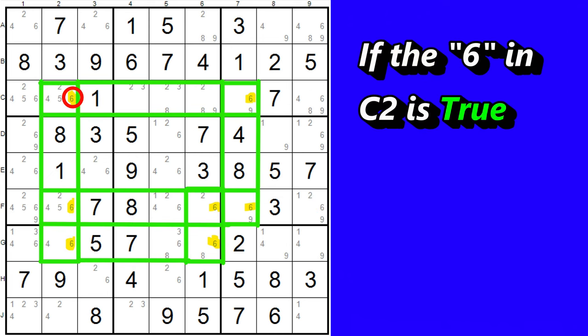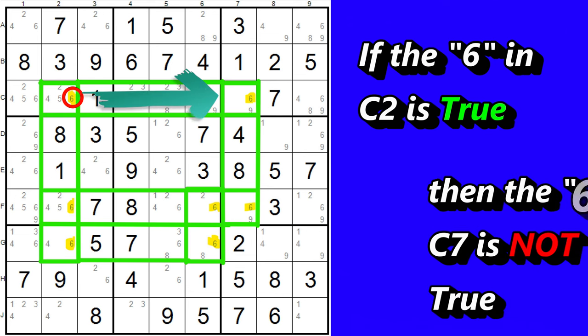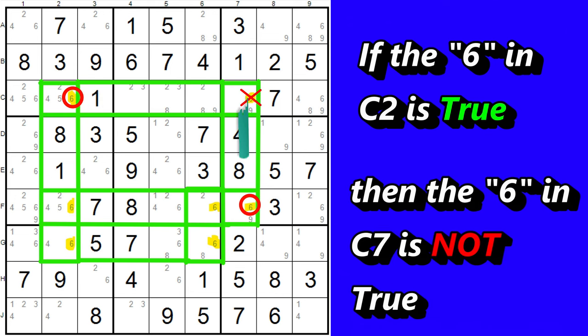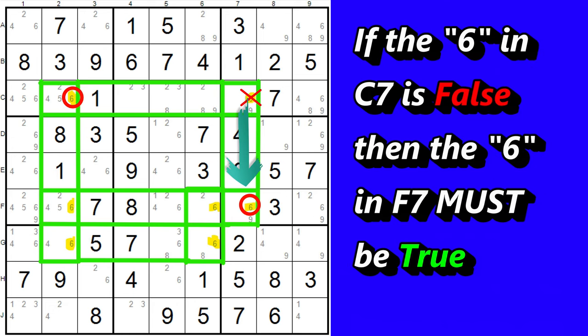Let's take a look at the logic behind this. Let's say this cell is a 6. So if this is true, then this cell in column 7 can't be true. So this must be true for column 7. And then this cell, G6, is true.